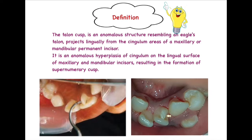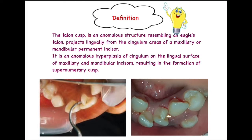Talon's Cusp is essentially an anomalous hyperplasia of the cingulum of the lingual surface of maxillary and mandibular incisors. Our tooth develops from repeated differentiation of various cells, particularly ameloblasts during the enamelogenesis phase. Sometimes there is hyperactivity of cells in the cingulum area, a hyperplasia in that particular lingual surface area, which leads to such a projection. This projection is also referred to as a supernumerary cusp in some texts, as it remotely resembles a cusp.